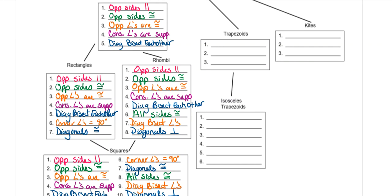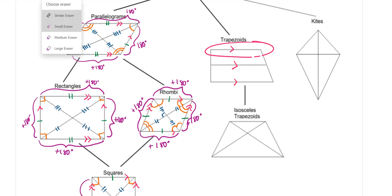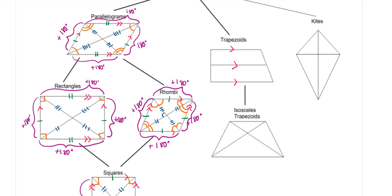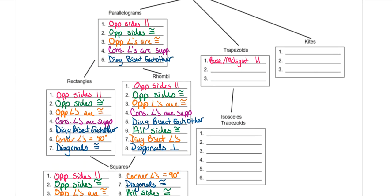On trapezoids, your base sides and mid-segment are parallel. So your bases and your mid-segment are parallel. What that means is this top base is parallel to the bottom base, and both are parallel to the mid-segment. Your bases are the parallel sides — on an isosceles, those are your parallel sides. The mid-segment is right in the middle, and it is also parallel.